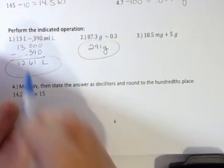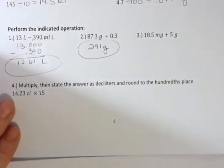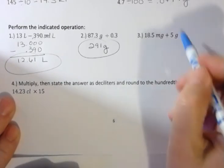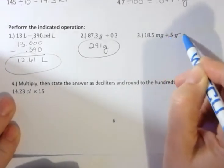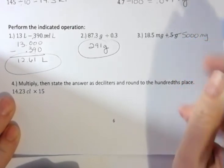The last one: I'd have to again change milligrams to grams or vice versa, whichever one you're asked to give your answer in. But if I changed grams into milligrams, it's a thousand, so I would say that five grams is actually five thousand milligrams, so I would have 18.5 and 5000, which is 5018.5 milligrams.